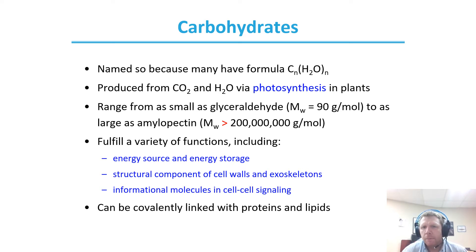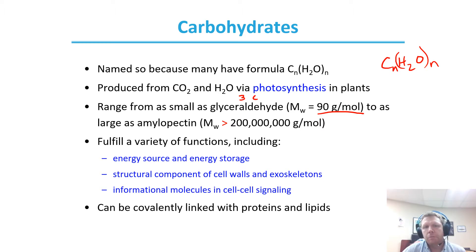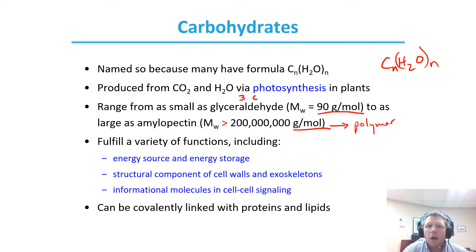Carbohydrates have the empirical formula CH₂O, with n as a multiplier. Carbohydrates are produced from carbon dioxide and water through photosynthesis in plants. They range in size from as small as glyceraldehyde, which is three carbons with a molecular weight of 90 grams per mole, to as large as amylopectin, which is more than 200 million grams per mole — a polymer with repetitive elements. These fulfill a variety of functions including energy storage and as an energy source, structural components of cell walls and exoskeletons, and as informational molecules in cell-to-cell signaling.